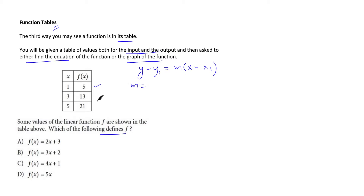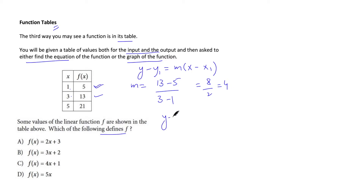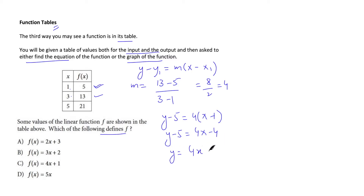Taking two points — y₂, y₁, x₂, x₁ — the gradient is (y₂ − y₁)/(x₂ − x₁) = 8/2 = 4. Using the point (1, 5): y − 5 = 4(x − 1), which gives y = 4x − 4 + 5 = 4x + 1. This is option choice C.